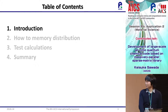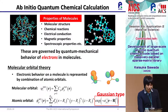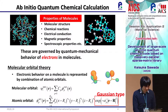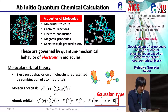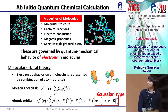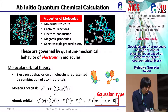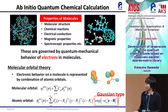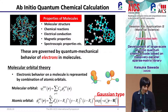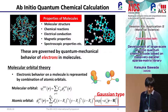Let me start with an introduction. Various properties of molecules such as molecular structure, chemical reactions, and electric conduction are governed by quantum mechanical behavior of electrons in molecules. The electronic behavior in a molecule is represented by a combination of atomic orbitals, where c is the coefficient of the molecular orbital. Generally, an atomic orbital is expressed as a multiple contraction of a Gauss-type orbital.